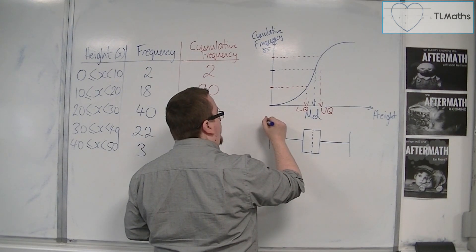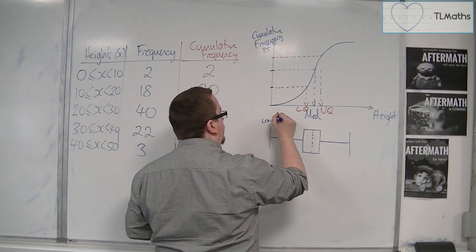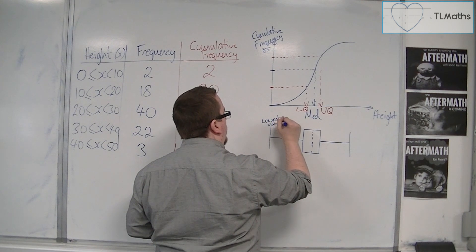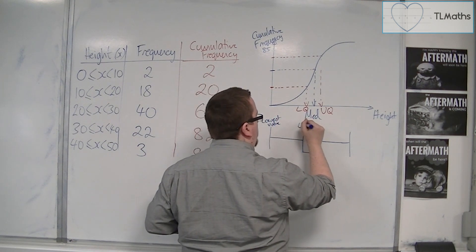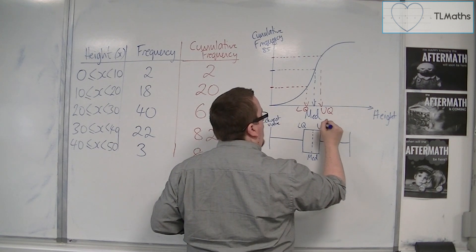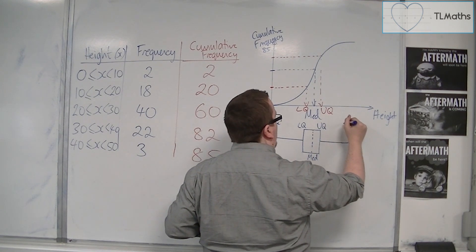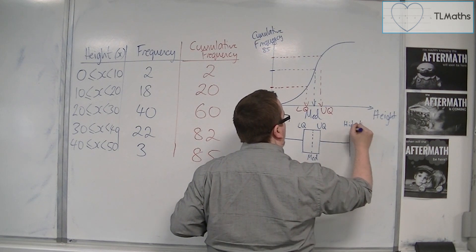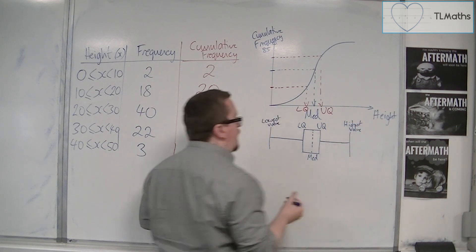This is your lowest value. This is your lower quartile. This is your median. And this is your upper quartile. And this is your highest value.